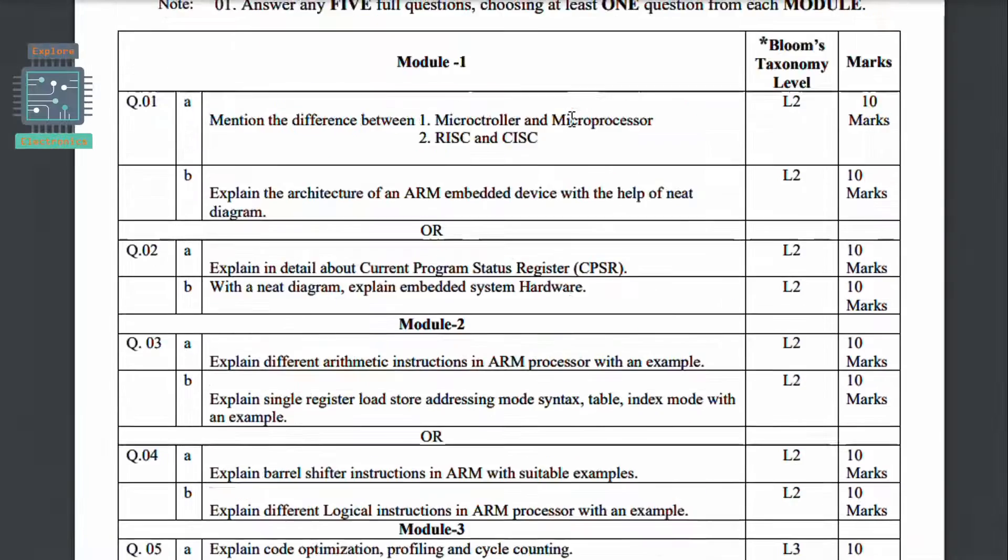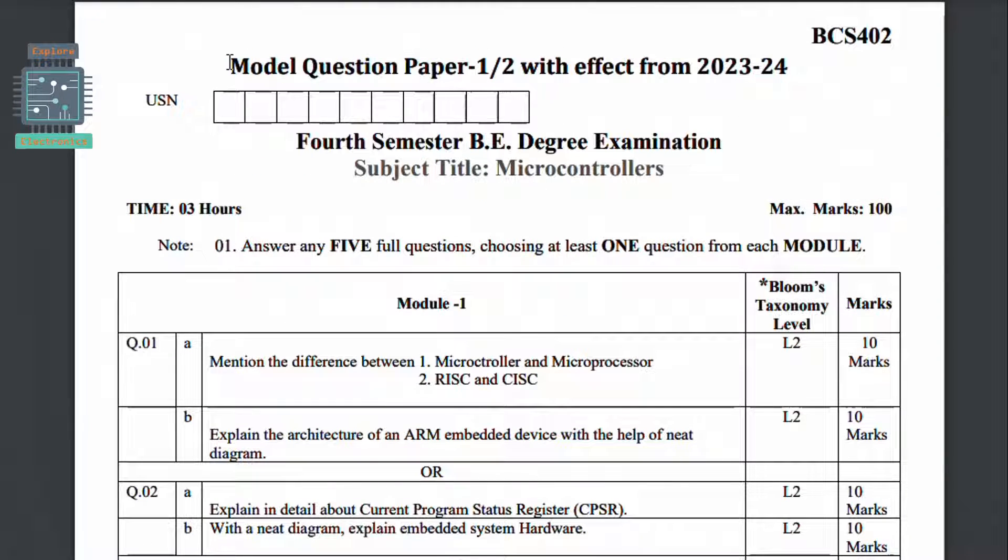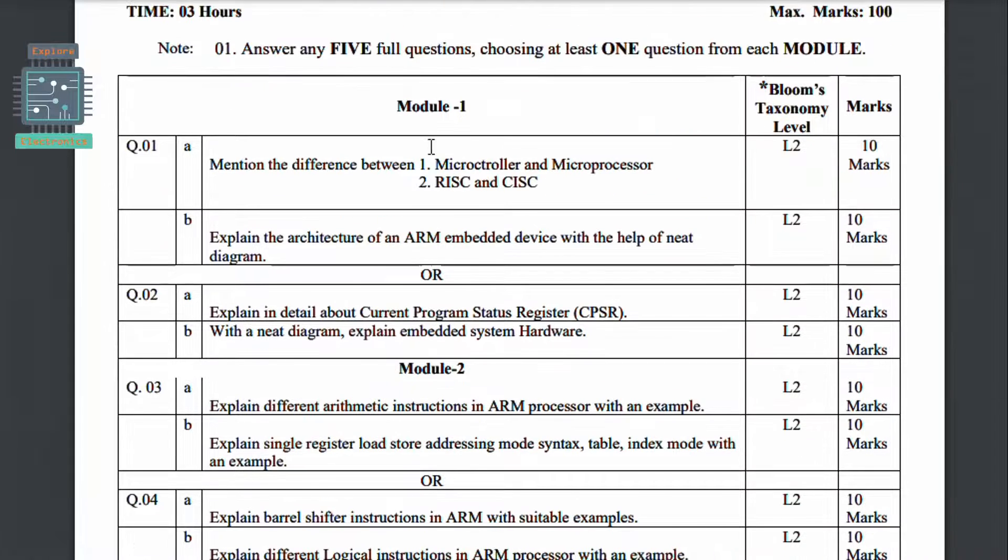Hey guys, welcome back to Explore Electronics. In this video let's see the model question paper released by VTU for the subject Microcontrollers with the code BCS402. This is a computer science branch subject. Coming to Module 1, the first question is mention the difference between microcontroller and microprocessor. This is a very common question you can see in any question paper of microcontroller or microprocessor related subject.